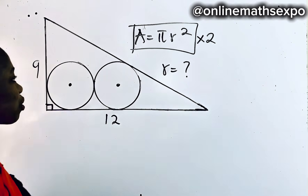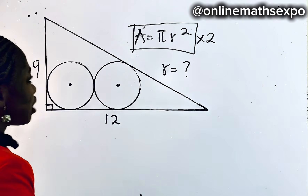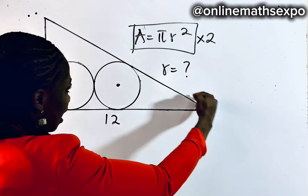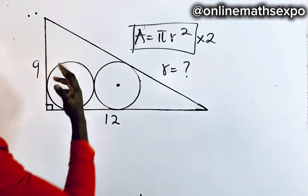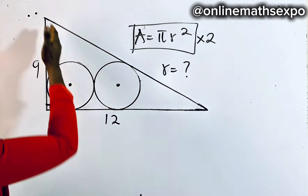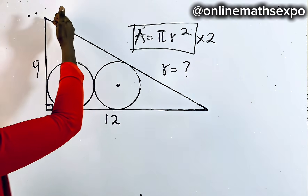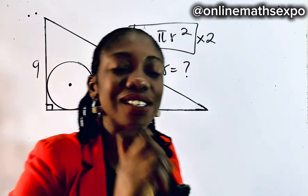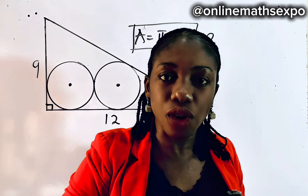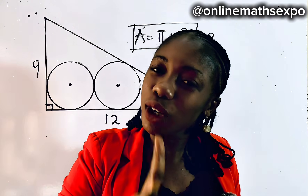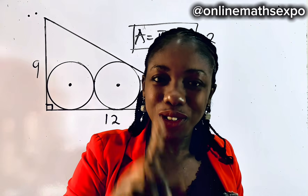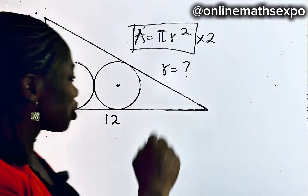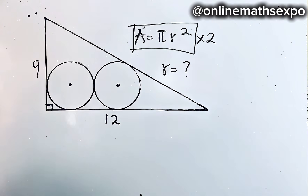What we need to do first is find this missing length. Remember we are given this as a right triangle, and when working with the sides of a right triangle, always remember to use the Pythagorean theorem. Let me show you how to do that.